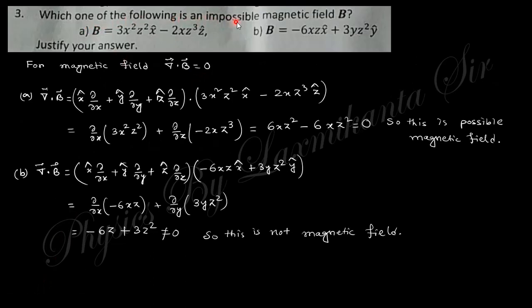Next question: which one of the following is the impossible magnetic field B? In case of magnetic field, divergence B must be zero because there is no existence of monopole. There is dipole, that is total in equals total out, that is why divergence of B is zero. If you calculate the divergence of B in these two cases, you can see in the first case this is zero, so this is possible. But in the second case this is not equal to zero, so this is impossible.